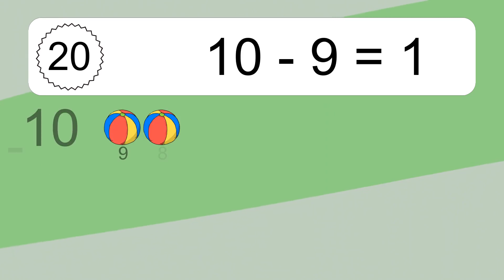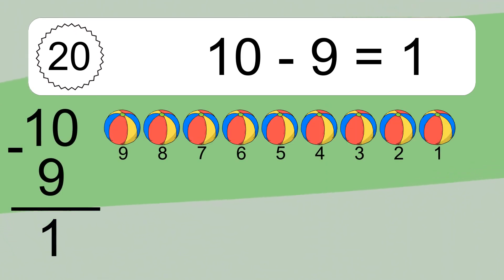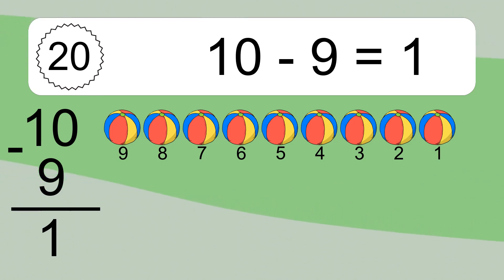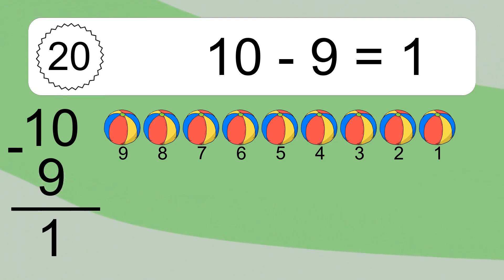10 minus 9 equals what? 10 minus 9 equals 1. Let's count it: 9, 8, 7, 6, 5, 4, 3, 2, 1.